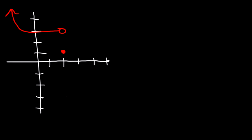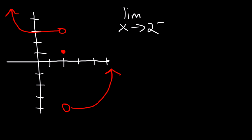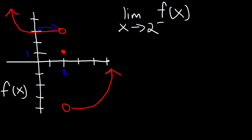Let's talk about how to find the value of a limit from a graph. Let's say we have an open circle at one point, a closed circle, and another open circle. What is the limit as x approaches 2 from the left side? This is known as a one-sided limit. As x approaches 2 from the left, the y value of that curve is 3.